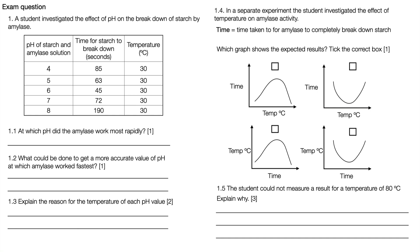Well if we take a look at pH 6, the time for starch to break down is the lowest. It's at 45 seconds, so that's where it worked most rapidly. So the answer for that is pH 6.